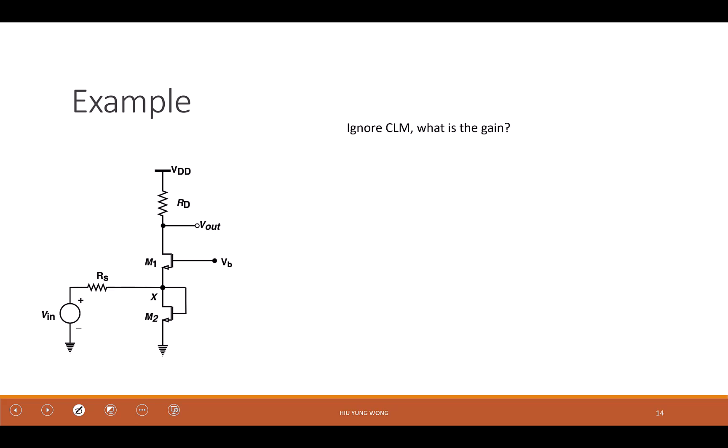Someone say common source with degeneration, which is also good because you see this. But the main point is that we're finding the gain, not the output impedance. From the gain's perspective, you need to know the input and output. So where is the input? Where is the output? Input is here. Output is here. So this is closer to which circuit? Common gate. Although this is not exactly at the source.